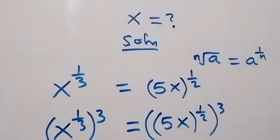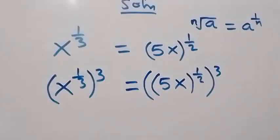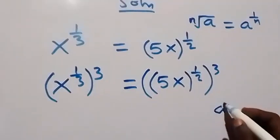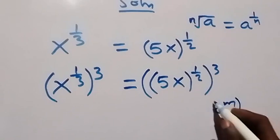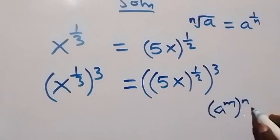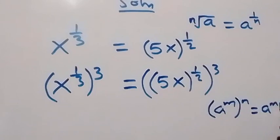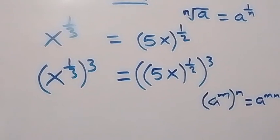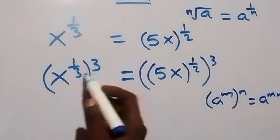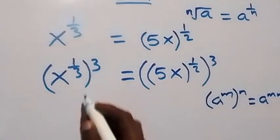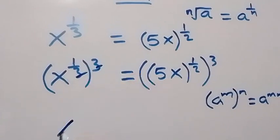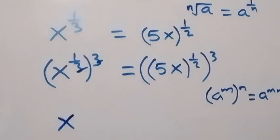And here, from the law of indices, we have a raised to power n, then raised to power m — these powers will multiply. Then from what we have here, when this multiplies, it cancels out, and we just have x raised to power 1, which is x.